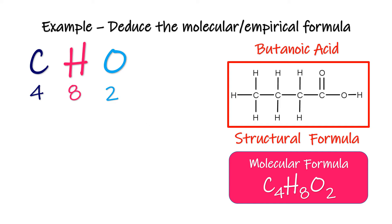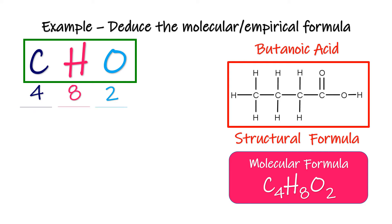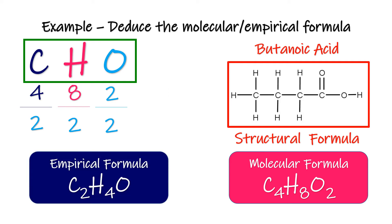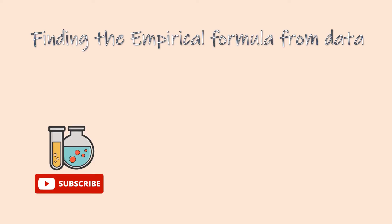To find the empirical formula, we only need to get the ratio of carbon to hydrogen to oxygen. Let's divide all the numbers in the molecular formula by the lowest figure to find the simplest ratio. The empirical formula is C2H4O. Now you know what the molecular, structural, and empirical formulas are.